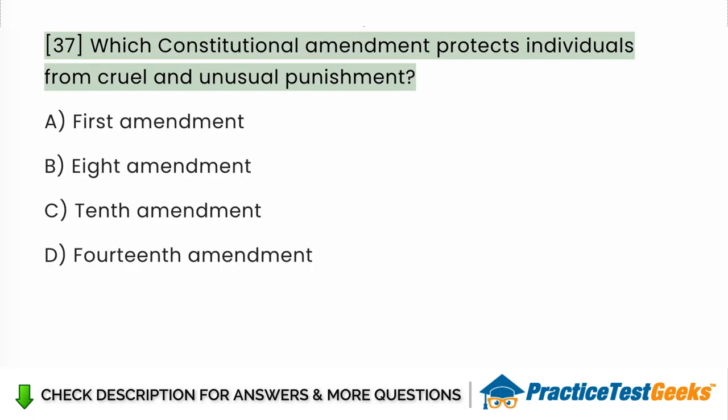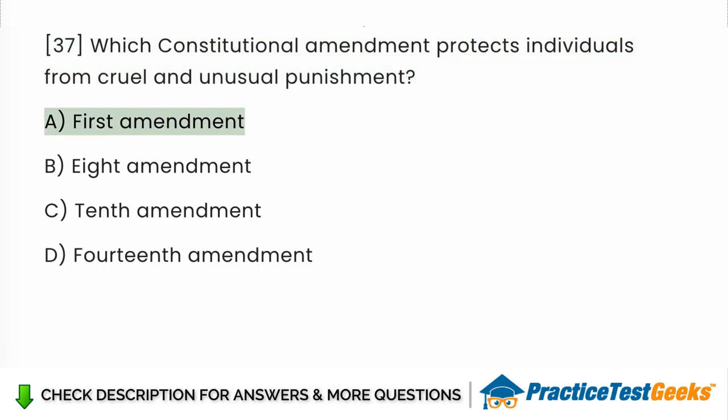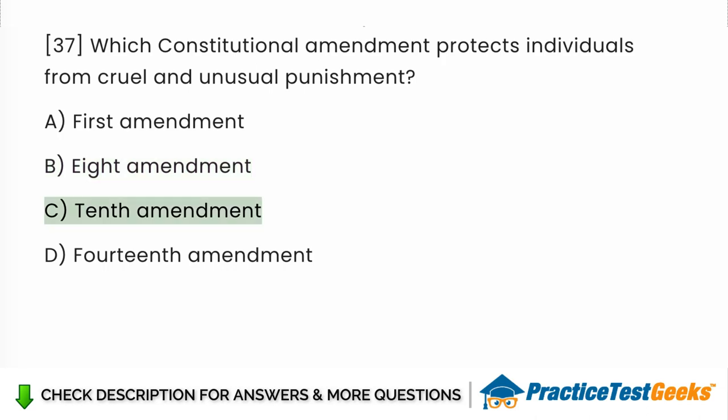Which constitutional amendment protects individuals from cruel and unusual punishment? a. First Amendment. b. Eighth Amendment. c. Tenth Amendment. d. Fourteenth Amendment.